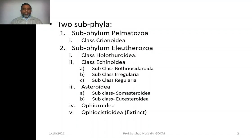Class Echinoidia has three subclasses: Bothriocidaroidia, Sideroidia, and Irregularia. Sideroidia has two orders: Somasteroidia and Euasteroidia.